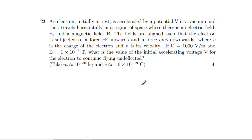Anyway, carrying on. Question 23: An electron initially at rest is accelerated by potential V in a vacuum, so it's accelerated through V. It then travels horizontally in a region of space where there's an electric field E and a magnetic field B aligned so the upwards force is eE and the downwards force is evB - different v's, this is capital V for voltage and small v for velocity.